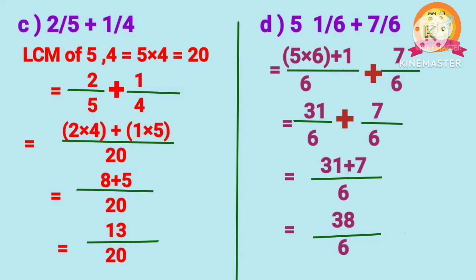Problem D: 5 and 1 by 6 plus 7 by 6. Here 5 and 1 by 6 is a mixed fraction, so first we should convert it into an improper fraction. After converting 5 1 by 6, we get 31 by 6. After adding 31 by 6 plus 7 by 6, we get 38 by 6.